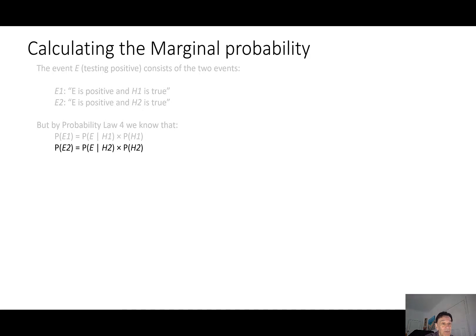And similarly, the probability of E2 is the probability that the person tests positive if they don't have a virus, times the probability they don't have the virus.